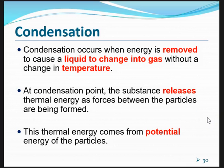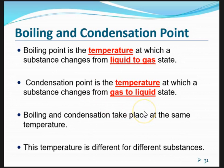Condensation occurs when energy is removed to cause a gas to change into liquid, without a change in temperature. At the condensation point, the substance releases thermal energy as forces of attraction between the particles are being formed. This thermal energy comes from the stored potential energy of the particles. During condensation, kinetic energy does not change, resulting in a constant temperature. Boiling point is the temperature at which a substance changes from liquid to gas, while condensation point is when it changes from gas to liquid — both occur at the same temperature for the same substance. For water, both the boiling point and condensation point are at 100 degrees Celsius.